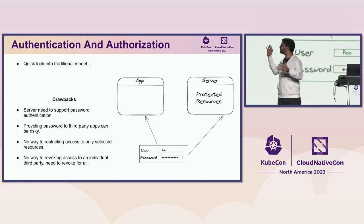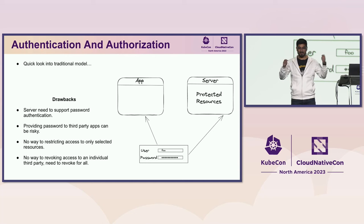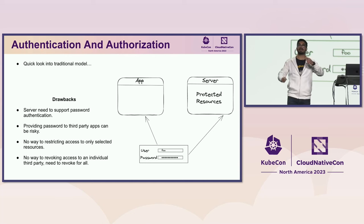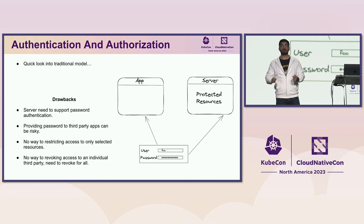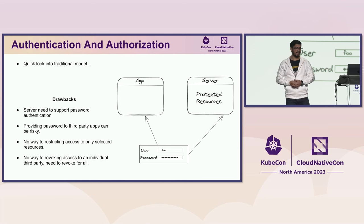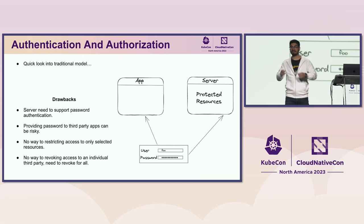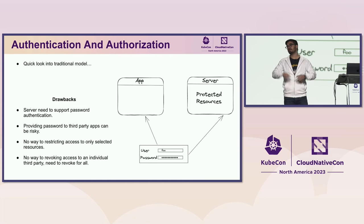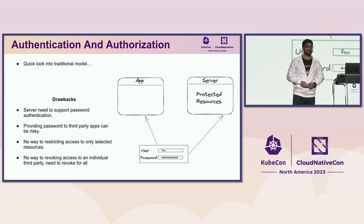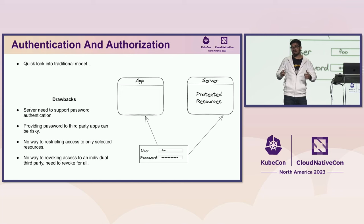The traditional model of authentication: you have an app, a server, and the server has protected resources. You could put your username and password to access those resources. But it had a lot of drawbacks — you couldn't do fine-grained tuning, revoking access was terrible, and providing your username and password could be risky, especially for a third-party app.